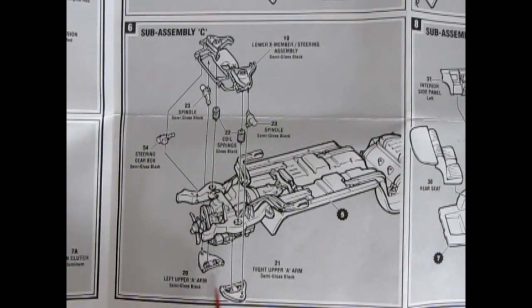And this kit also comes with a steering box, which is a nice extra detail. Then our upper A arms, left and right. So, all that would go together to give us our sub-assembly C.